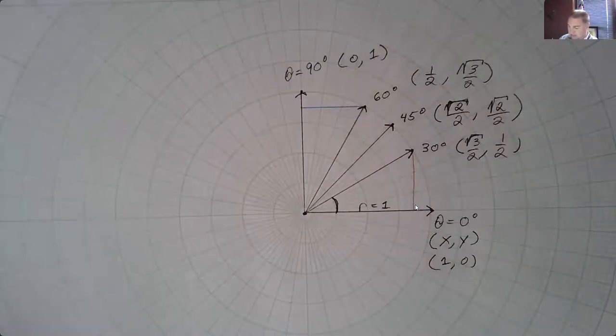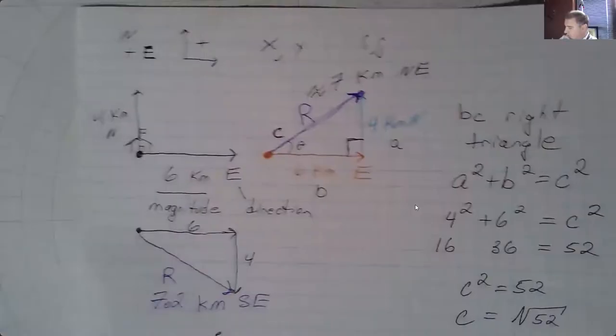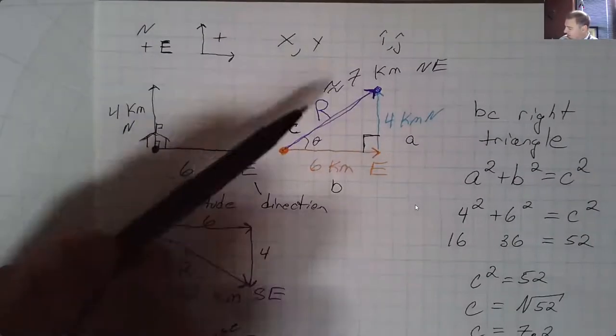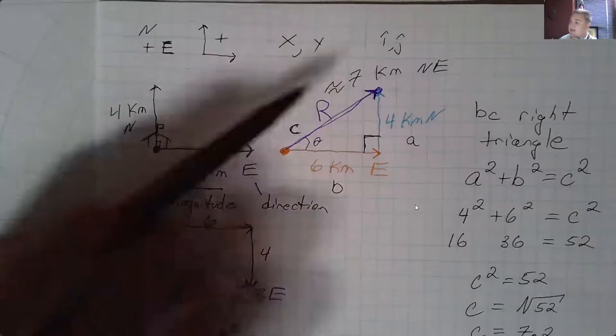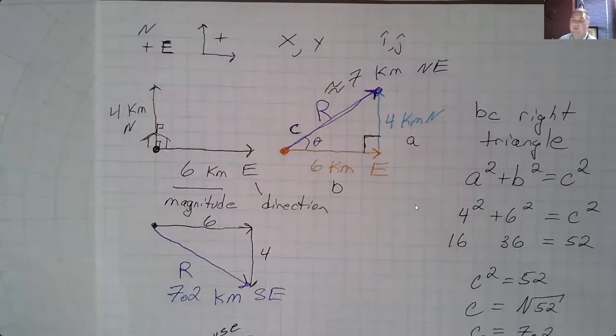And so, let's say that you knew this vector was about 7 kilometers. Let's say that you knew how far from the school you were when you finished the walk, and you were about 7 kilometers away, and you knew the angle,